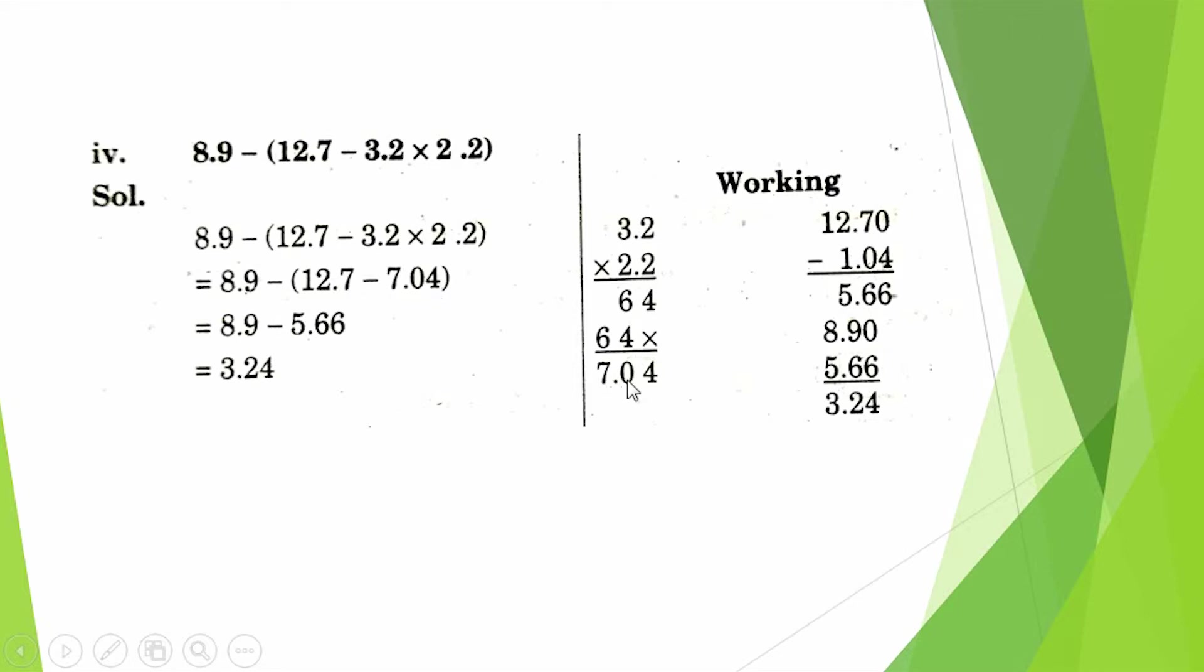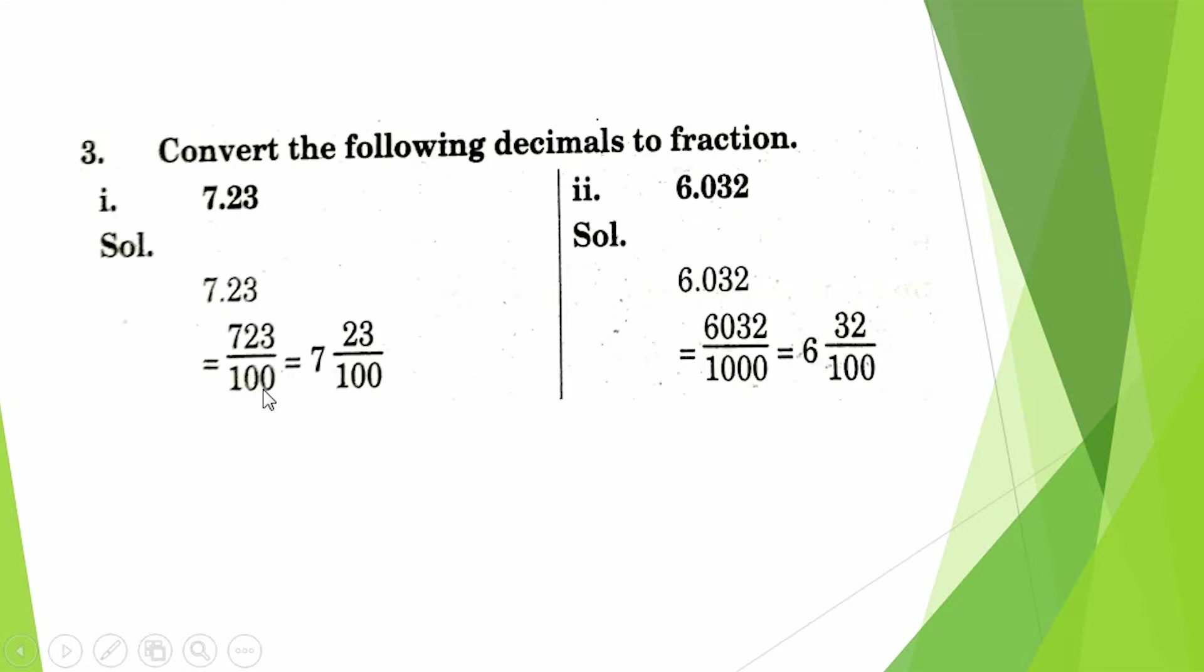8.9 minus (12.7 minus 3.2 × 2.2). When we multiply these two values, answer becomes 7.04. When we minus 7.04 from 12.7, answer comes 5.66. When we minus 5.66 from 8.9, answer comes 3.24.